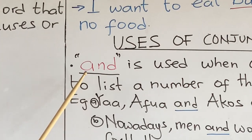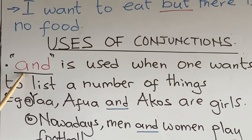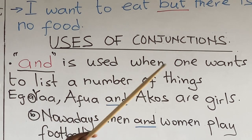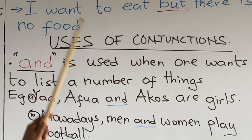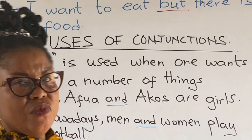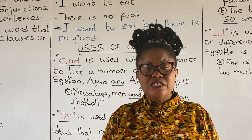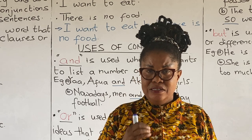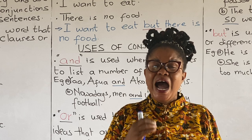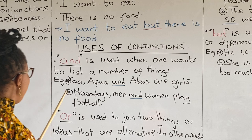Let's look at 'and' — the use of 'and' in joining two sentences together. 'And' is used when one wants to list a number of things. In a sentence, when you list a number of things, you can use 'and'. So let's look at examples of sentences and how 'and' has been used. Example A: